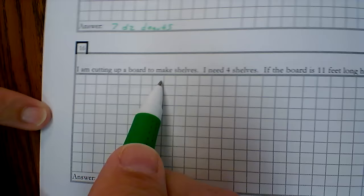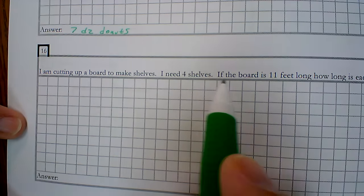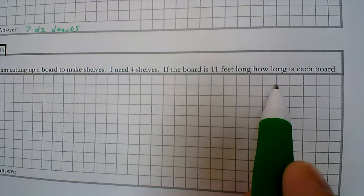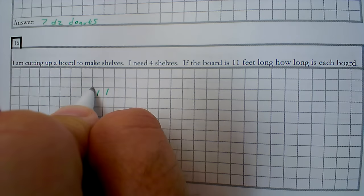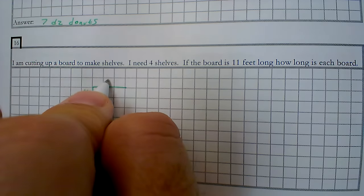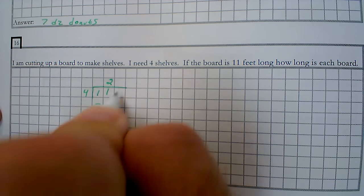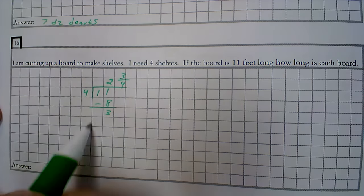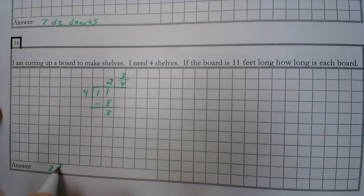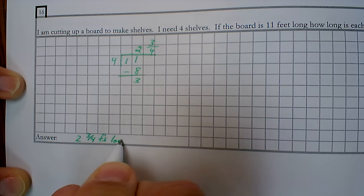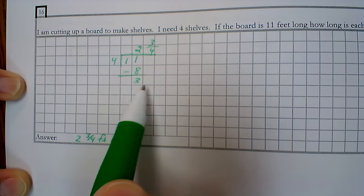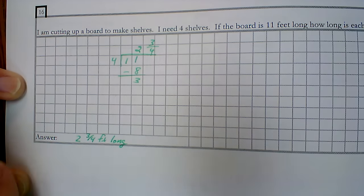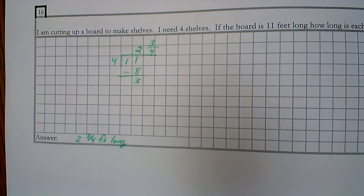Last problem. I'm cutting up a board to make shelves. I need 4 shelves. If the board is 11 feet long, how long is each board? So I'm taking this 11 foot board, splitting it into 4 equal pieces. So this is 2. 2 full groups. So I know that each board is 2 and 3 fourths feet long. Now, could I add a decimal point and a couple zeros there? Yeah. But I know that making it a fraction is quicker and it's not as much division. So each board is 2 and 3 fourths feet long.